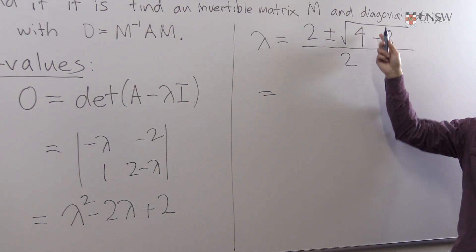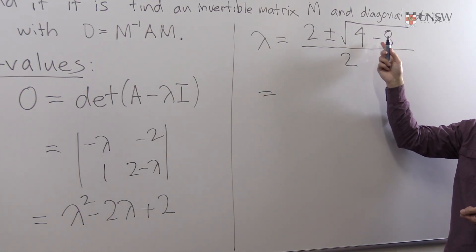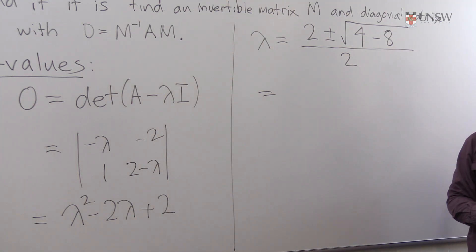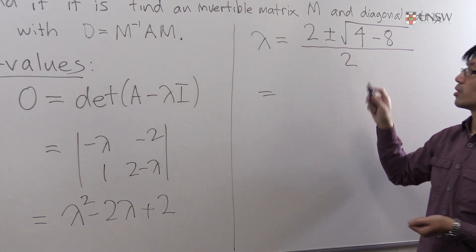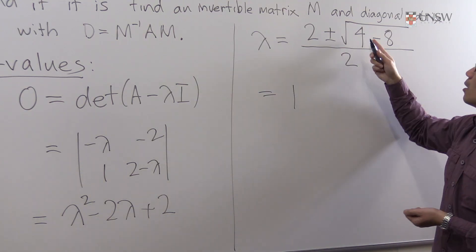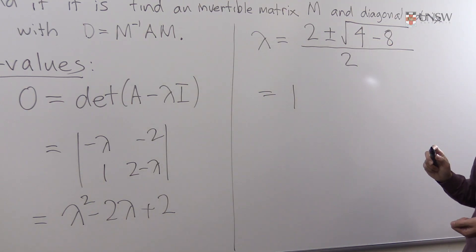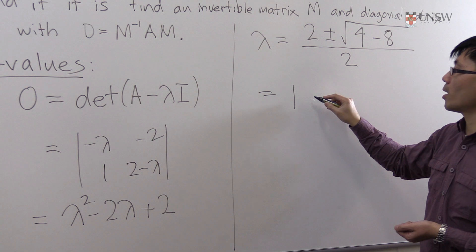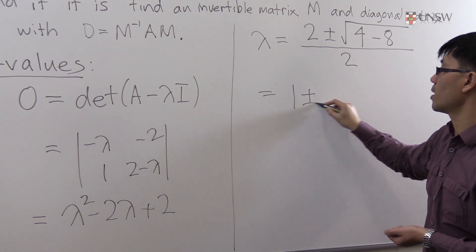As you can see, inside the square root sign we have minus 4, so this is going to be a complex number. 2 and 2 gives you 1, so this is the square root of minus 4, that's plus or minus 2i. Dividing by 2 gives you plus or minus i. So we've found the two eigenvalues.